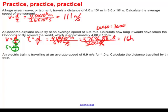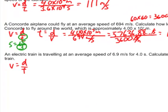Last one: an electric train is traveling at an average speed of 6.9 meters per second for 4.0 seconds. Calculate the distance traveled by the train. Well, the basic equation once again is velocity is equal to distance divided by time, and this time I'm trying to calculate the distance.